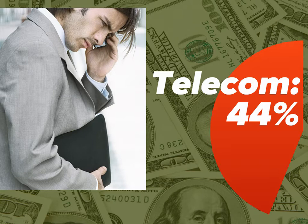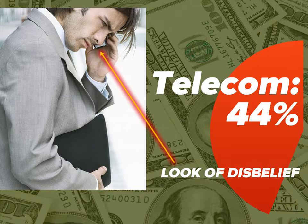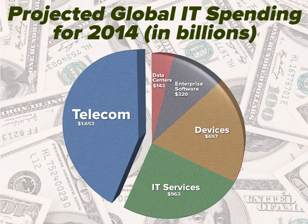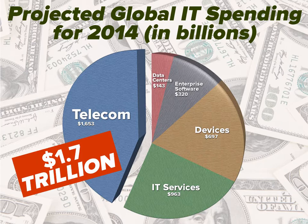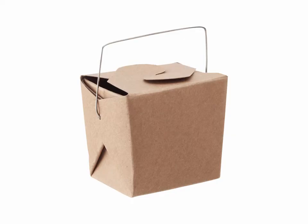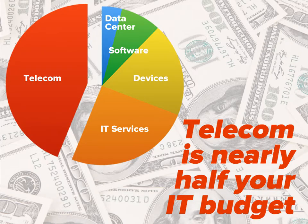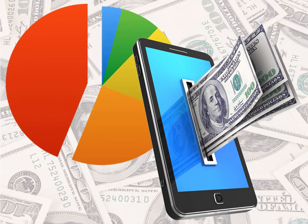That's a bit hard to believe, and even our business stock photo model isn't buying it. In case you were wondering, those numbers come from Gartner's projections for the 2014 Worldwide IT Budget, published in January 2014 — published in a table, which we turned into the pie chart you're now looking at. And now we come to one of the first two things you should take away from this video: telecom is nearly half your IT budget. As the biggest slice of the IT budget pie, it's also the first and best place to look for savings opportunities.